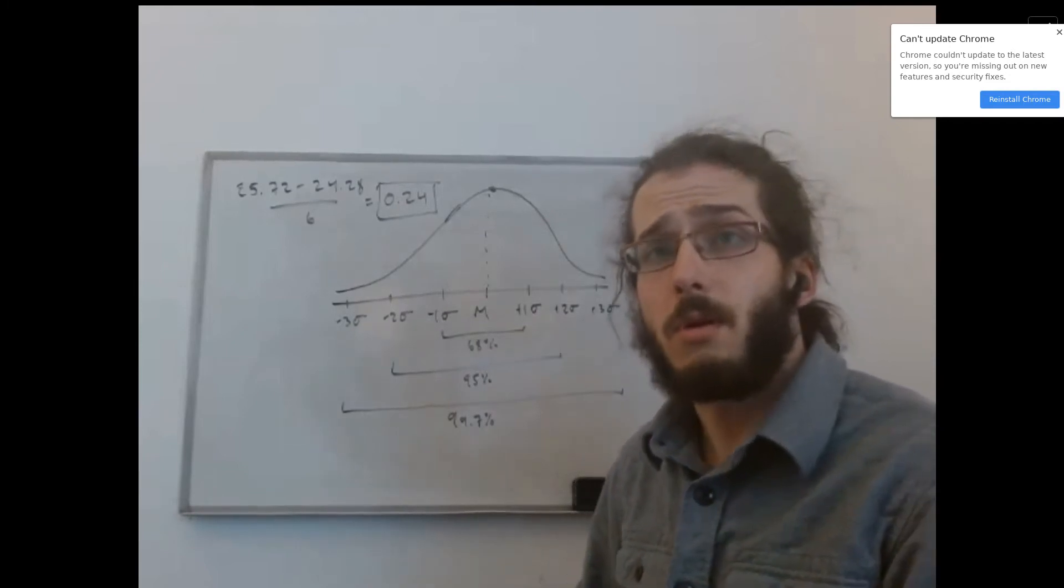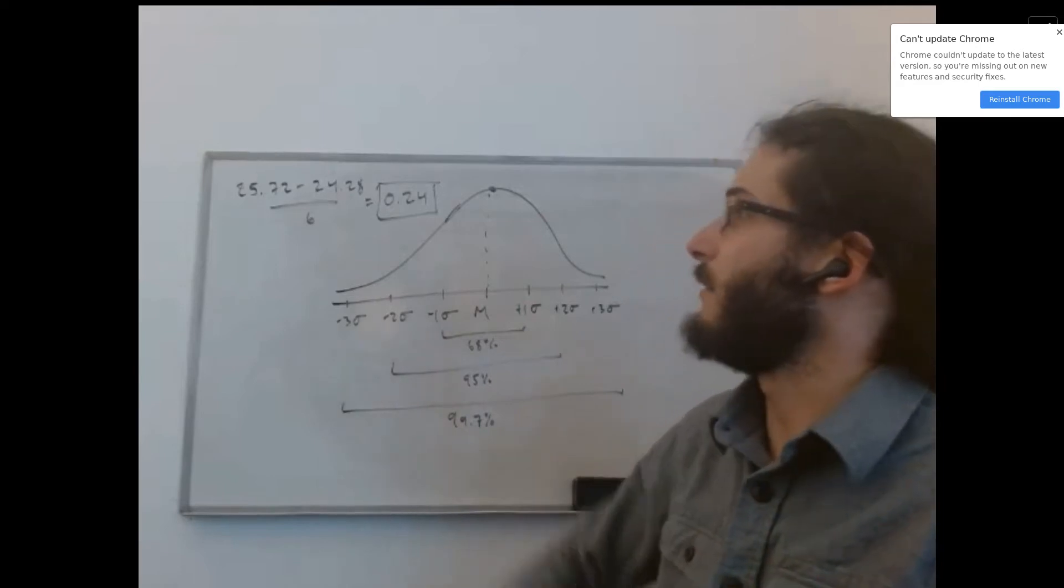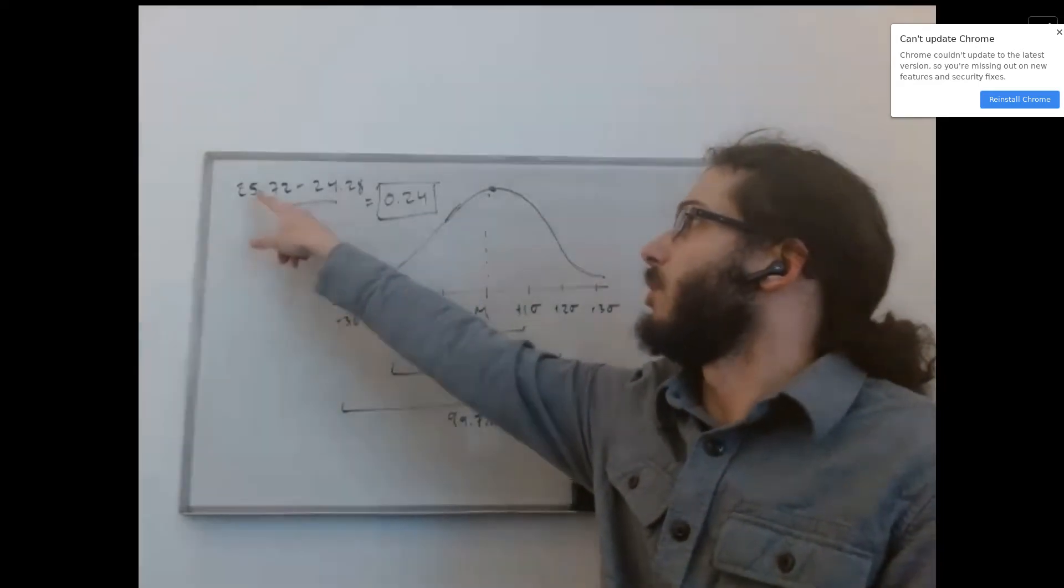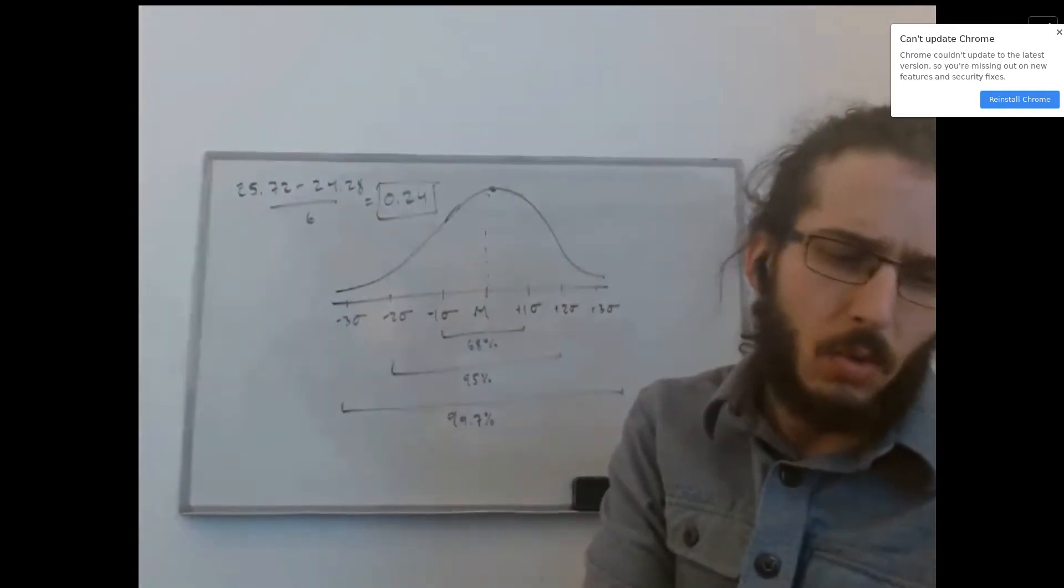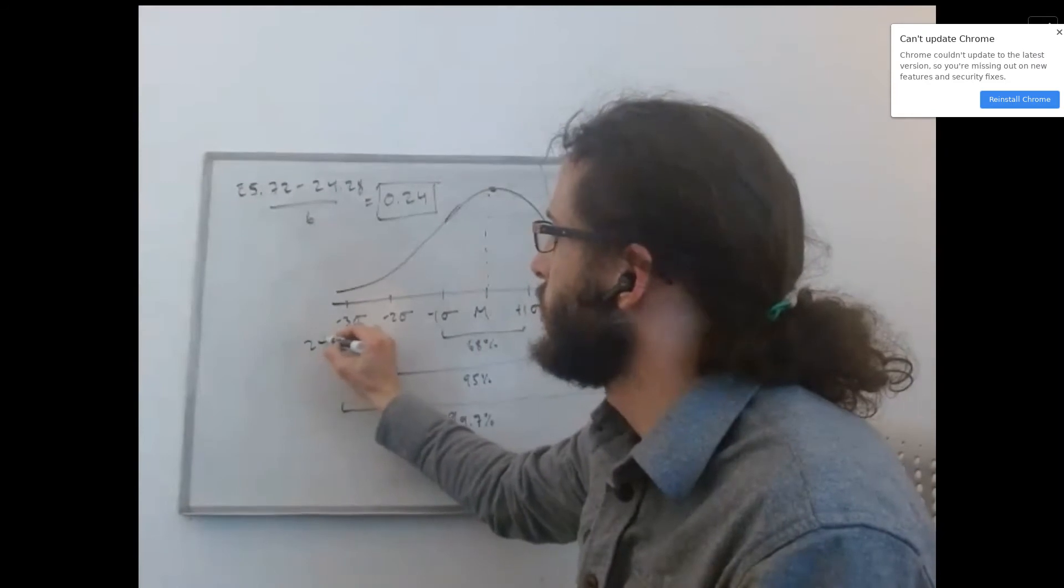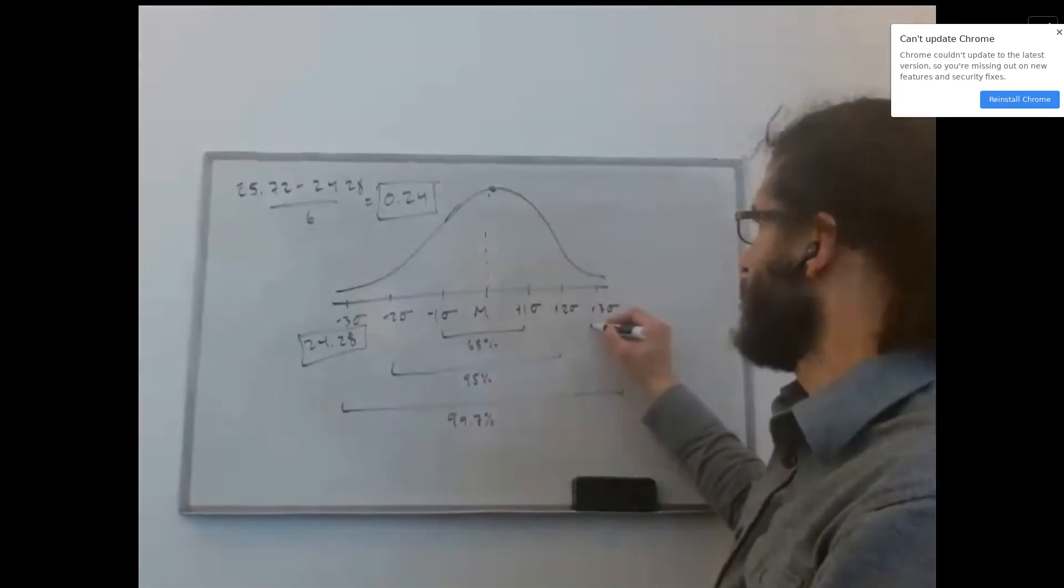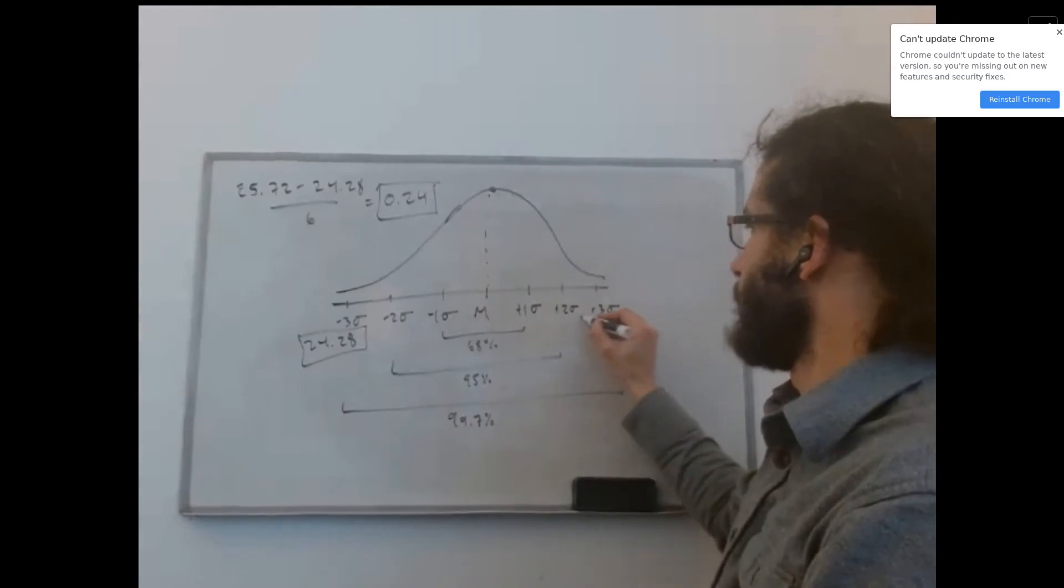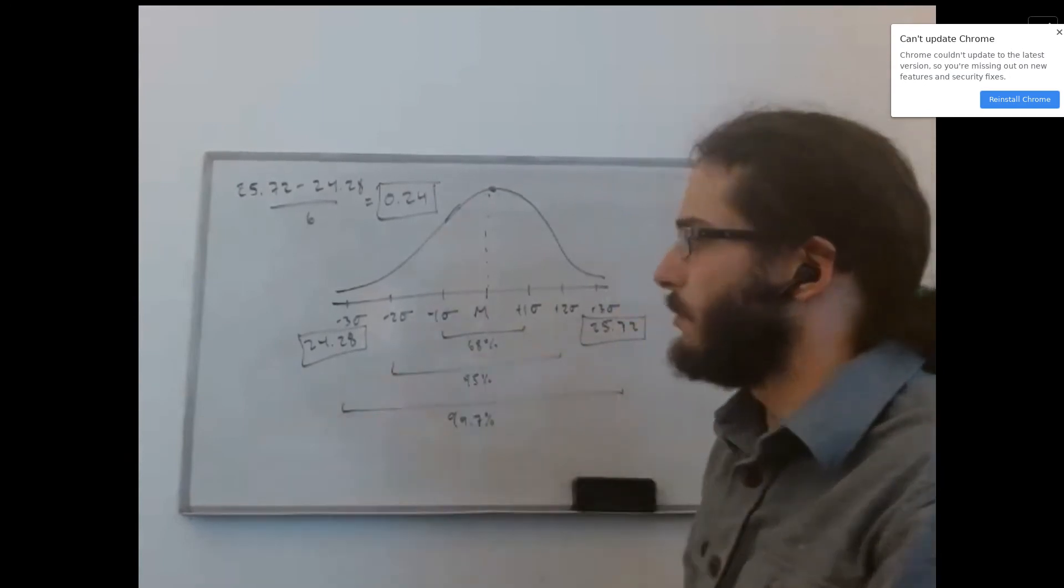So if we are told that 99.7% of the bags of rice have weights between 25.72 and 24.28 kilograms, we can think of the 24.28 kilograms number as being three standard deviations below the mean and the 25.72 kilograms number as being three standard deviations above the mean.